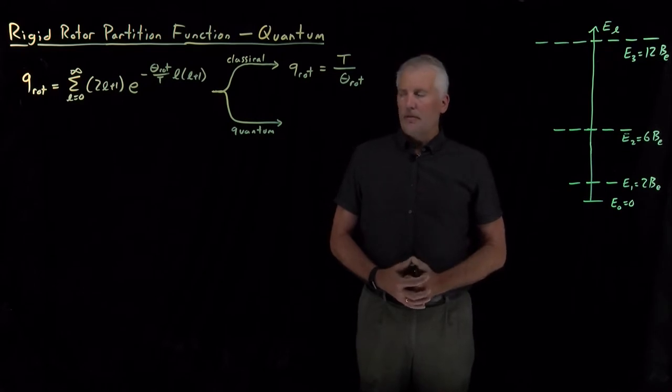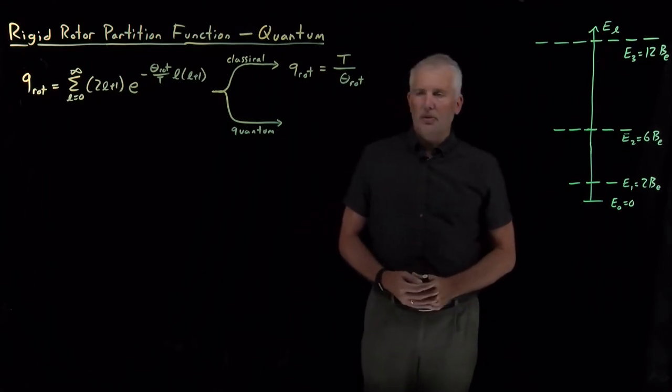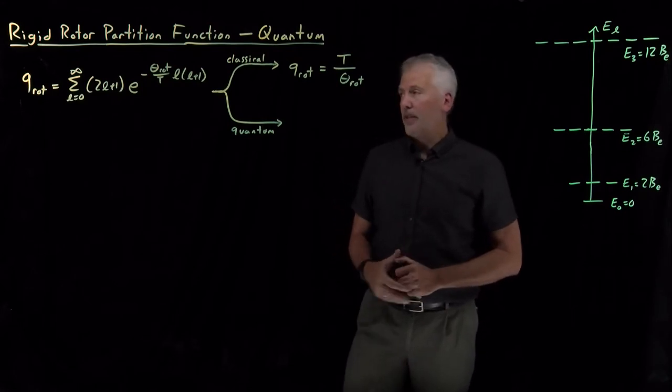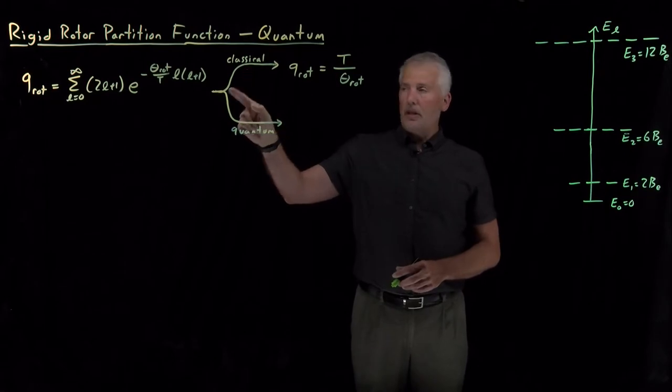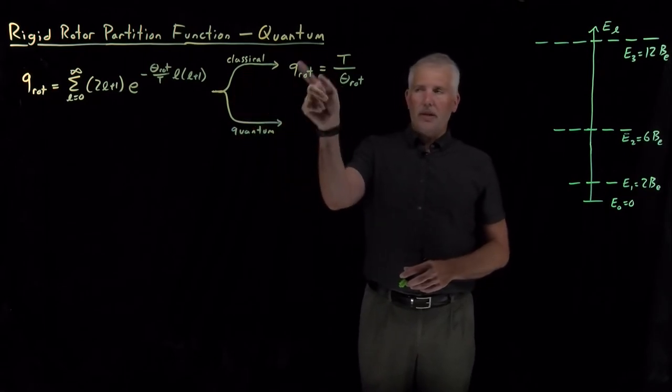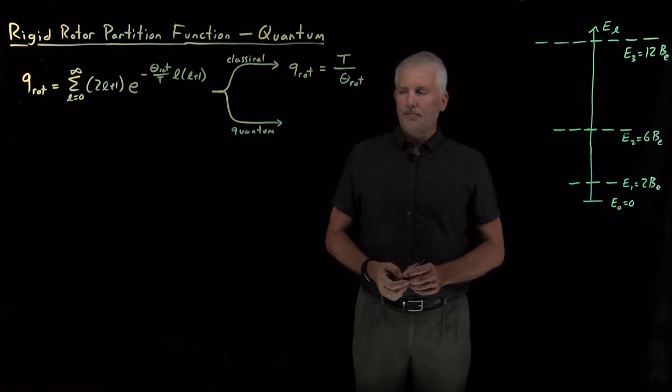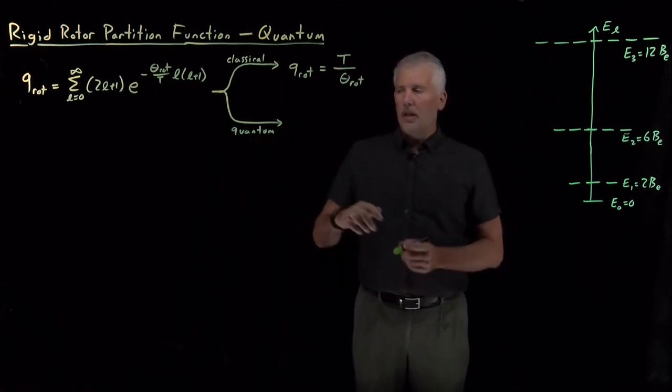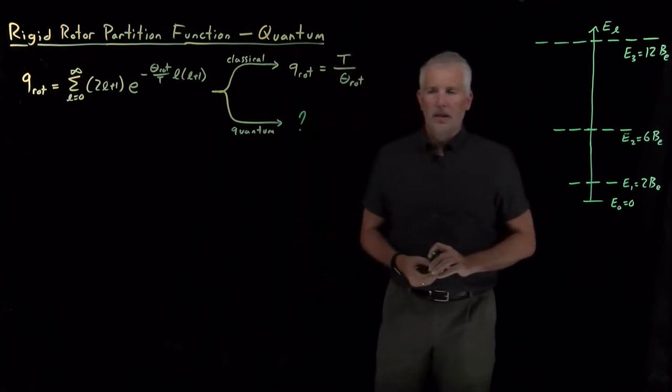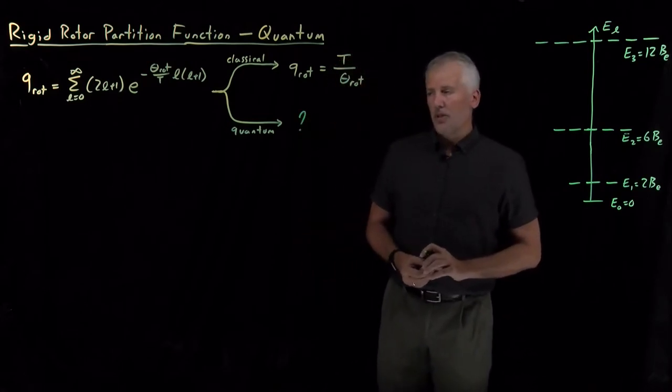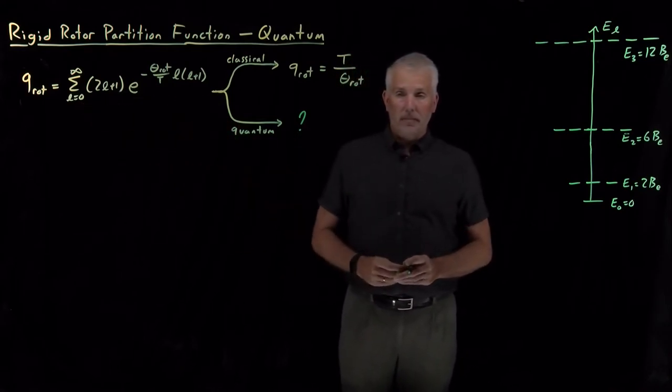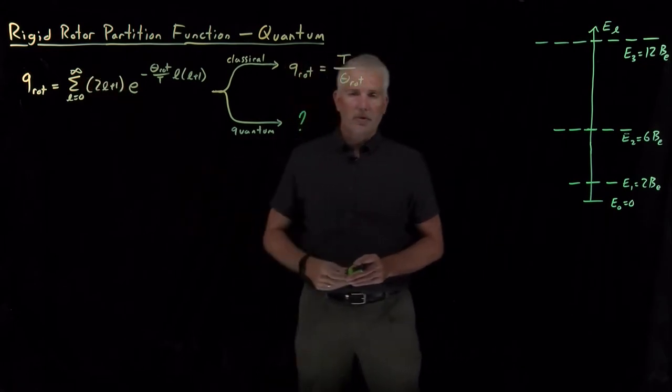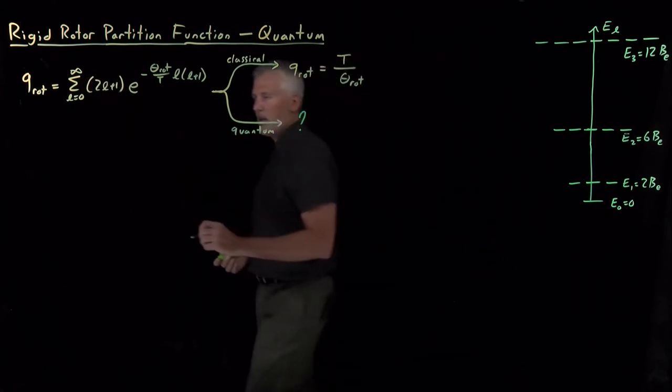So for the partition function for a rigid rotor, we've managed to understand what the answer should be in half of the cases. In the classical limit we can simplify that quite a bit, and it works out to be just temperature divided by the rotational temperature. But under conditions where we can't assume the classical limit, we don't necessarily know yet what the partition function should be. So it turns out we're left with no option really other than to compute the sum, which sounds like bad news because it looks like there's an infinite number of terms in that sum, but it doesn't actually turn out to be all that bad.